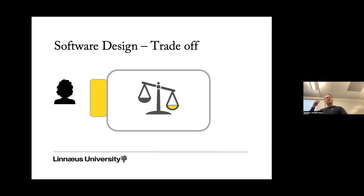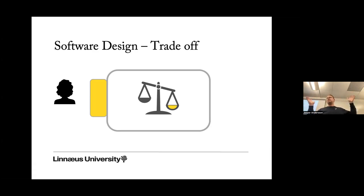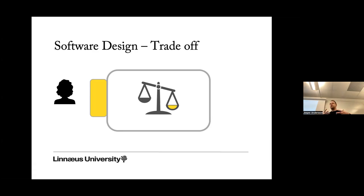When it comes to software design, it's relatively simple if you consider just one user, one property, and an indefinite amount of resources — time, money, computational power. Then it's fairly straightforward. But when you have huge projects, lots of stakeholders, lots of people involved, and lots of requirements, the complexity starts to kick in and it becomes more and more difficult.